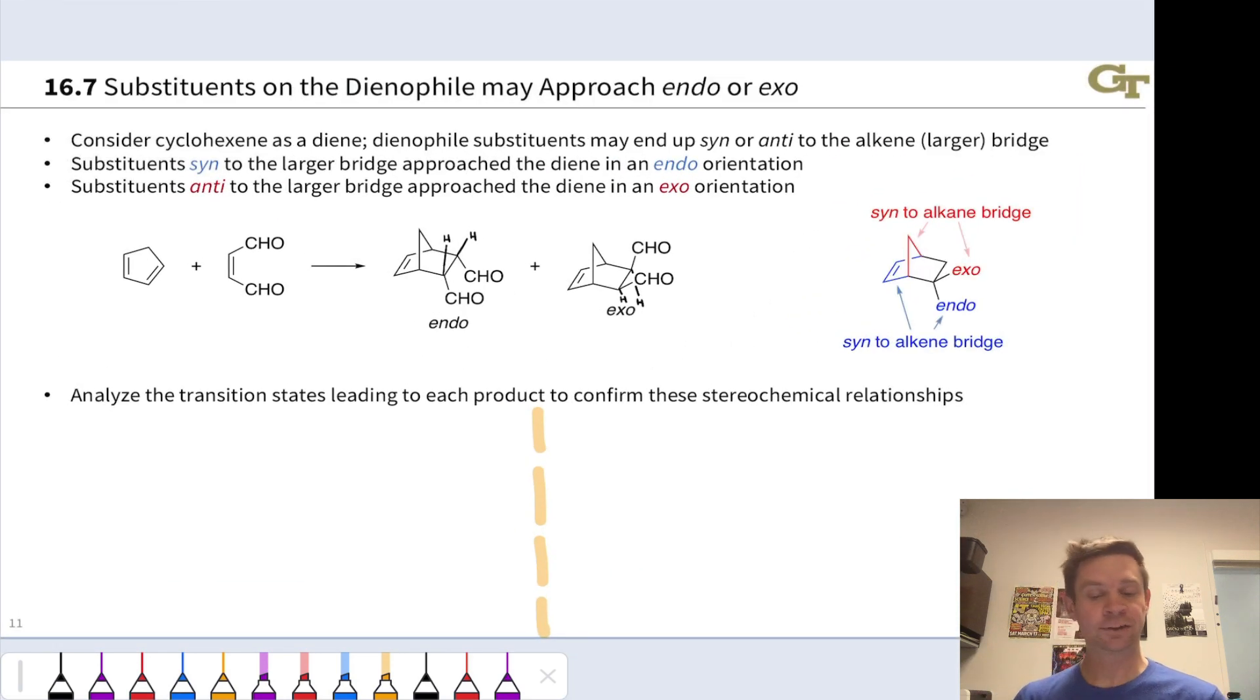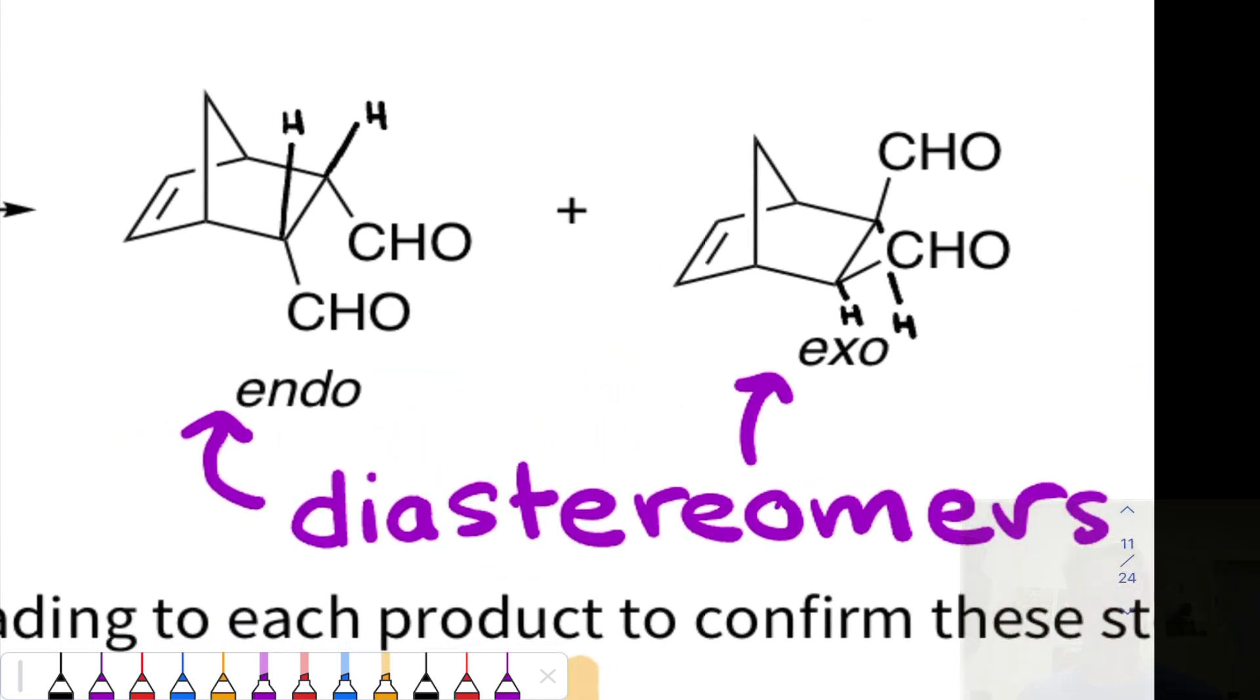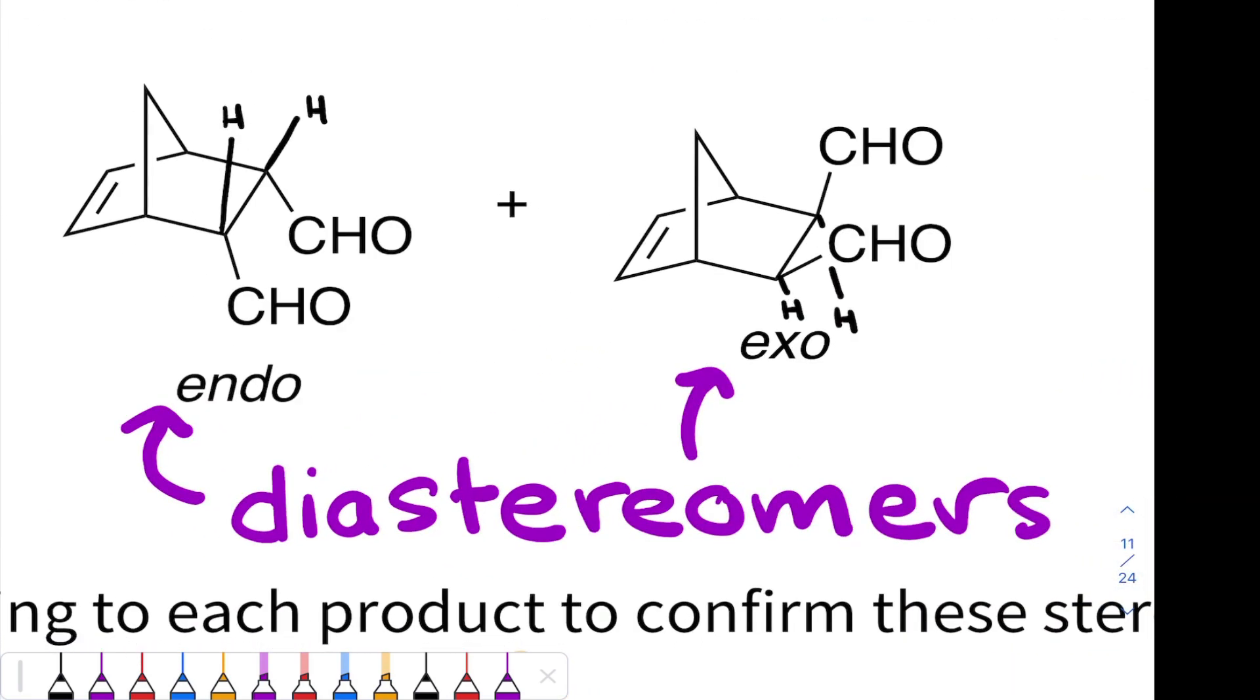Now the endo and exo structures are diastereomers. They are not mirror images. They have a difference in a cis-trans relationship, is one way to think about this.